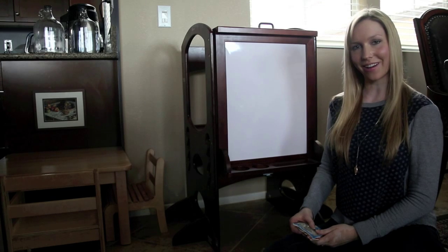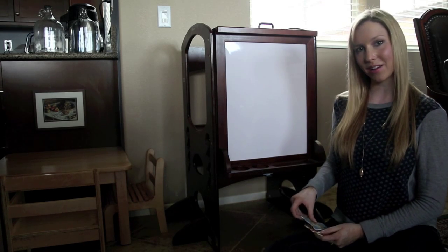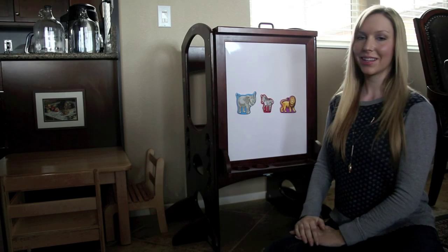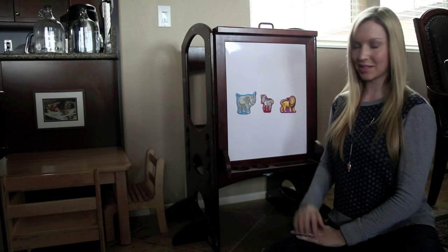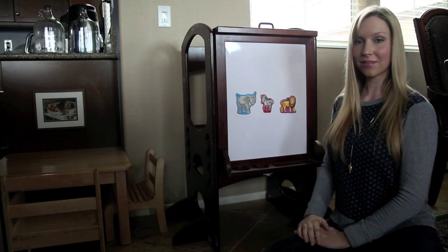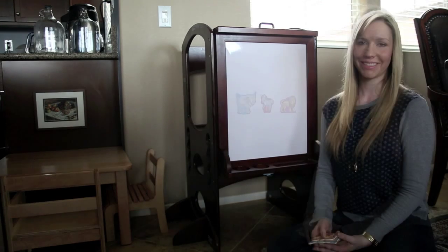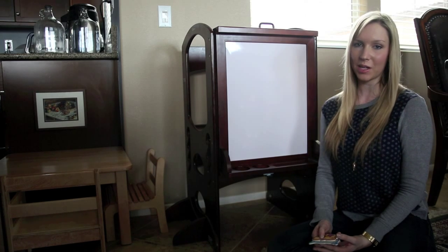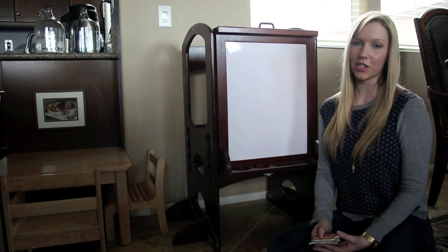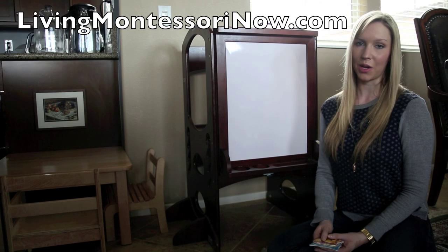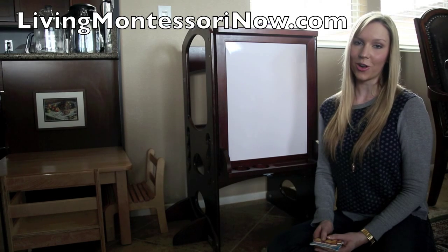The third period is recall. Put the animals back on the board, then ask, what is this? What is this? What is this? You'll typically spend the most time in the second period. It's great to be creative in finding ways to keep your child interested in the activity. Only go on to the third period if you feel your child will be successful. Otherwise, just give the names again and finish the lesson in a way that your child will feel that he or she was a success.